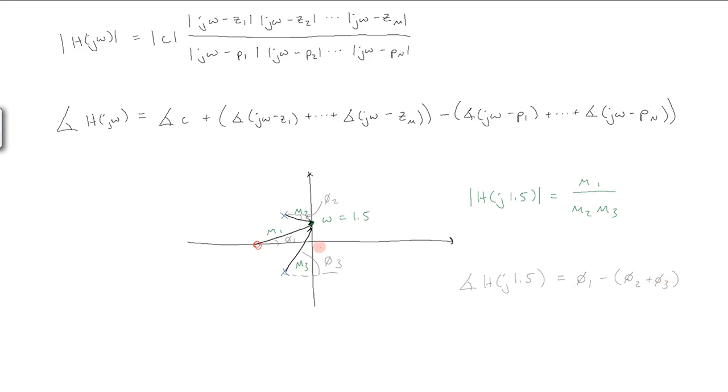And we can do this for every point omega along the imaginary axis, and that's going to give us our entire Fourier transform. That's how it's actually evaluated.